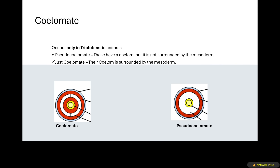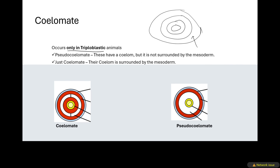Now we go to the coelomates. An animal is coelomate because it has got a coelom, which is the body cavity. A coelom occurs only in triploblastic animals, which have got three germ layers — the endoderm, the mesoderm, as well as the ectoderm. The coelom will develop here in the mesoderm of the animal. Under coelomate, we've got two types: we've got the pseudocoelomate and we've got just the coelomate.